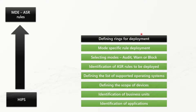The next step is to define ring models. For rules where you are not getting false positives, start moving them to block mode. For rules where you are getting false positives, refine your exclusions. Exclusions will be covered in much more detail in our implementation video, where I will show how to enable attack surface reduction rules using PowerShell, GPO, or Intune — so make sure you watch those videos as well.